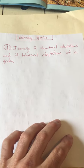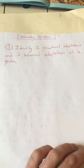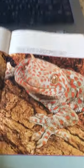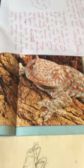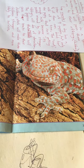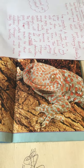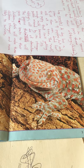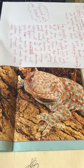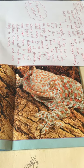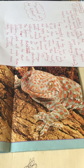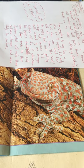Here's our question for today: identify two structural adaptations and two behavioral adaptations of a gecko. I'm going to cover up part of the image because it gives away one of the answers. I want you to look at this gecko and where it lives in its habitat, and tell me what two structural adaptations and two behavioral adaptations have allowed geckos to still survive today.